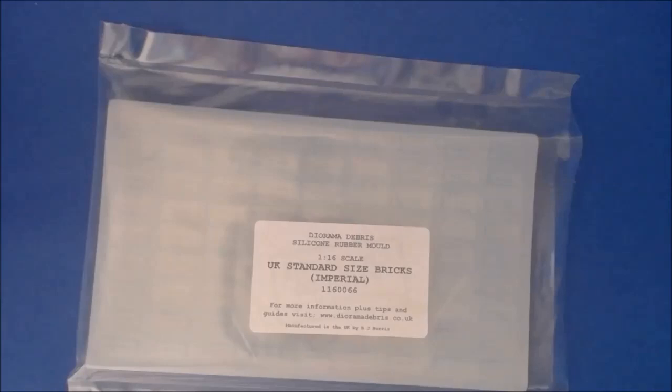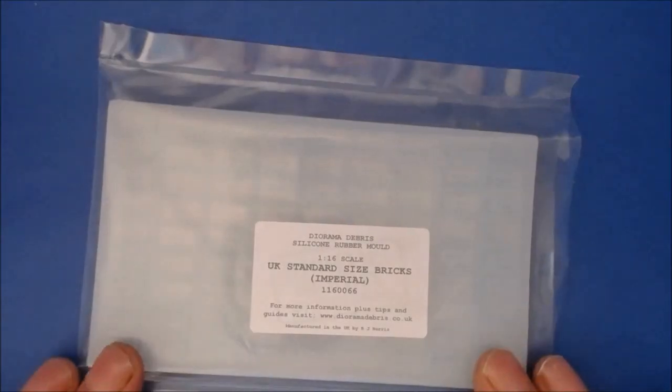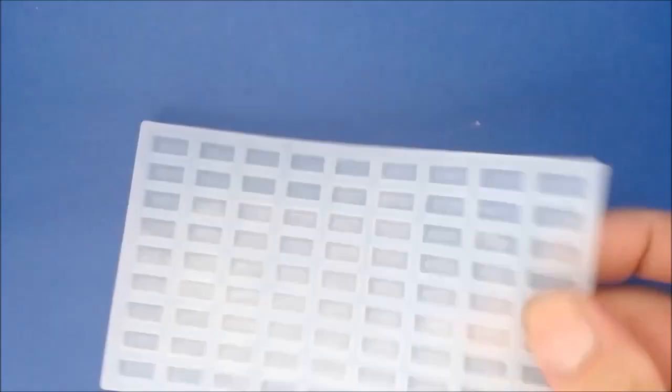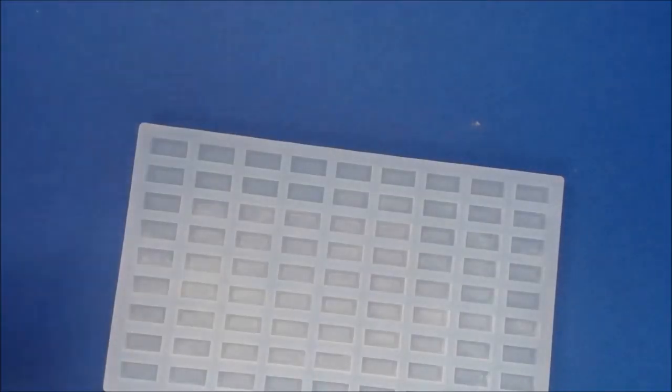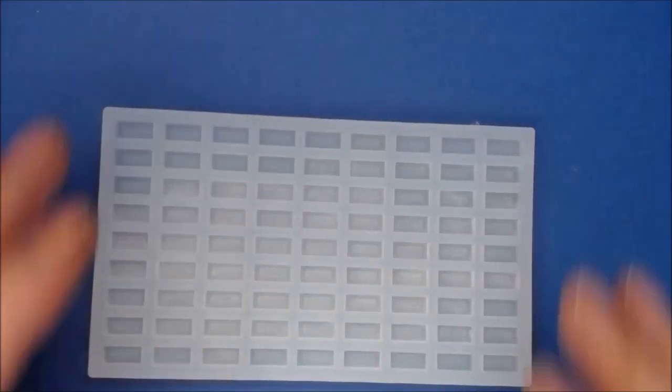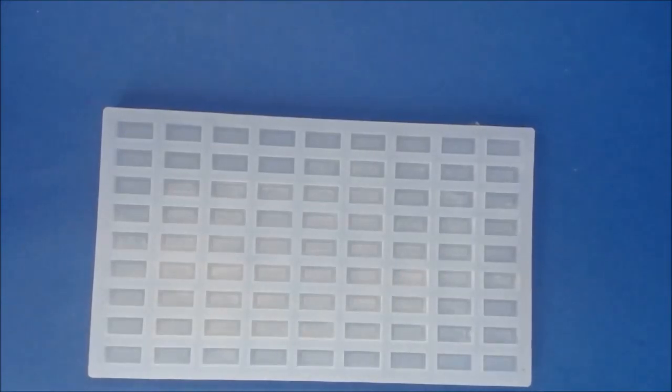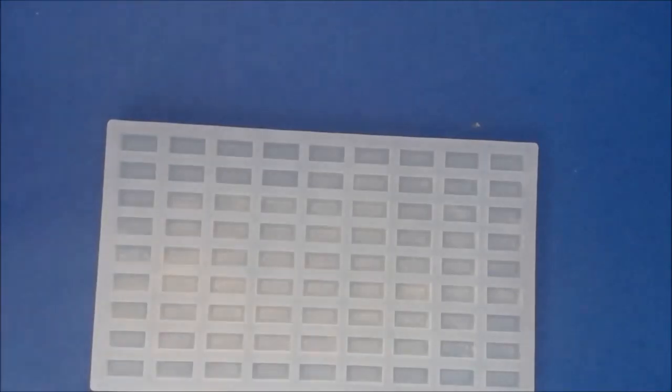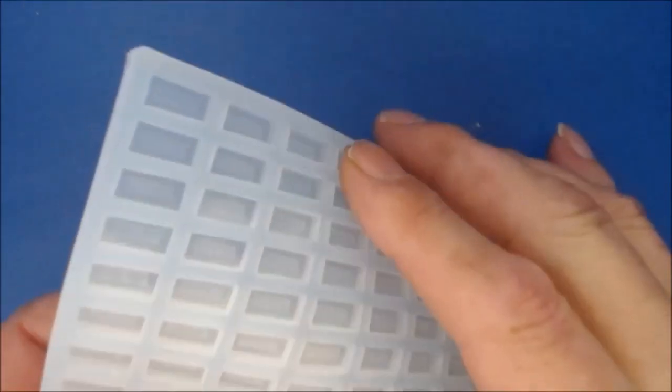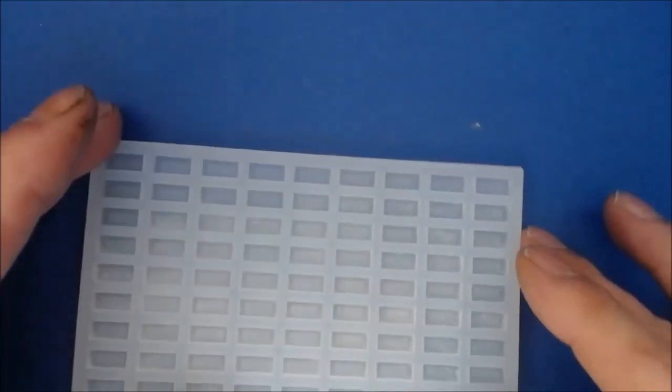1/16th scale bricks. We'll get this out the mold and have a little look. We have a total of nine by nine, so we have nine bricks down, nine across, which gives us a total of 81 bricks per casting, which is a fair tidy amount.